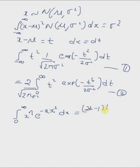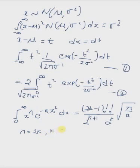factorial divided by 2^(k+1) · a^k, multiplied by √(π/a). Here, n is equal to 2k, and k is an